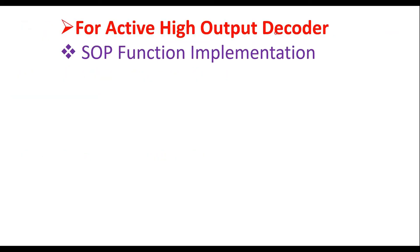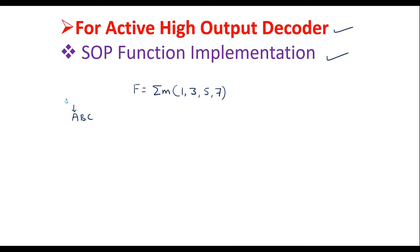For active high output decoder SOP function implementation, let me take the function f equal to summation m(1, 3, 5, 7). The summation m indicates the min terms or the product terms. Let a, b, c be the variables, with a as MSB and c as LSB. With that, f can be represented as: 1 is nothing but 001 in binary.